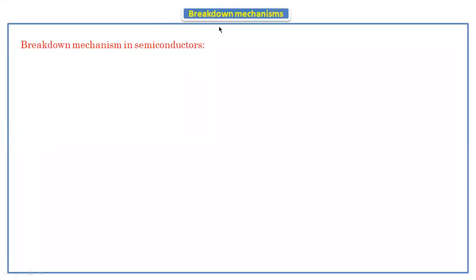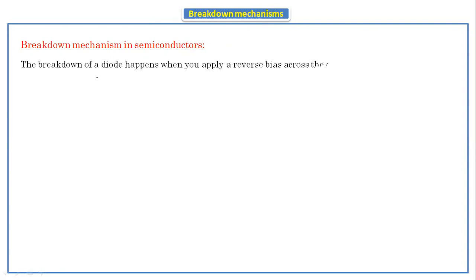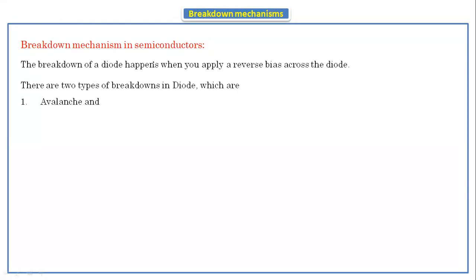Hello everyone, today we are going to discuss the breakdown mechanisms in semiconductor diodes. The breakdown of a diode happens when you apply a reverse bias voltage across the diode. When we apply the reverse bias voltage in the PN junction diode, the breakdown mechanism will occur. There are two types of breakdown in diodes: avalanche breakdown and Zener breakdown.